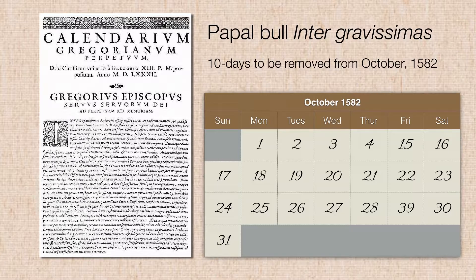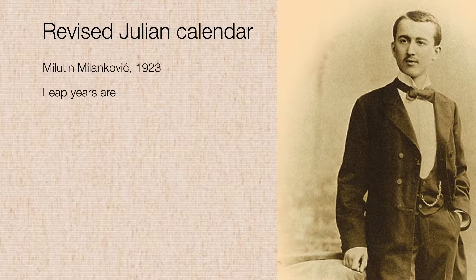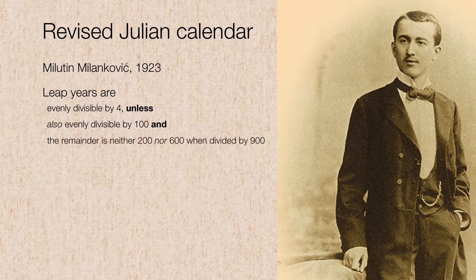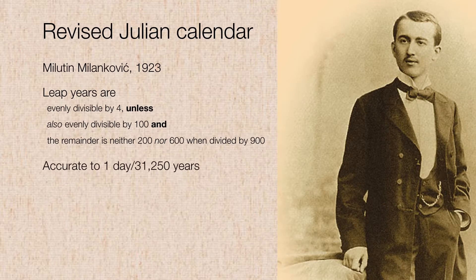Now you may be thinking, is there a way to make an even more accurate calendar? And in fact, there is a calendar that is out there to this day. It was developed in 1923 by Milutin Milankovic. He was an astronomer and a mathematician, and he worked out a formula for leap years that are evenly divisible by 4, unless they are also evenly divisible by 100, and the remainder is neither 200 nor 600 when divided by 900. It's a little bit of a clunky algorithm, but it's actually a lot more accurate — accurate to one day every 31,250 years, about 10 times more accurate than the modern Gregorian calendar.